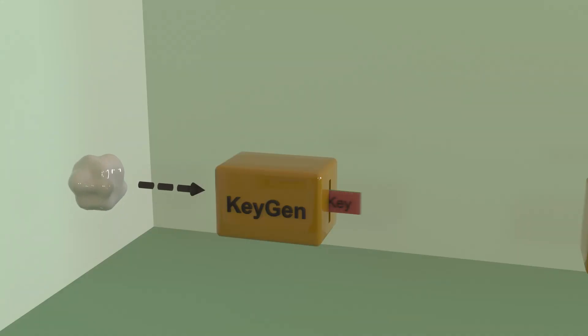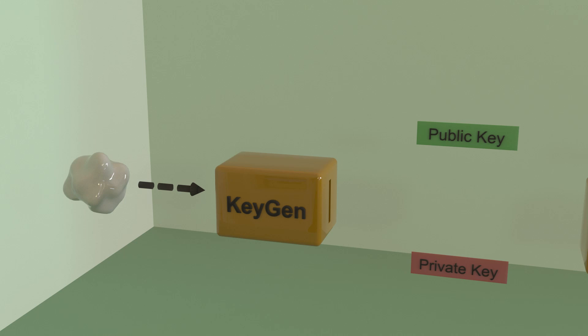Hash functions are one part of making digital signatures. The other is what is known as a digital signature algorithm. Digital signatures use something known as asymmetric keys, which are used for both signing as well as encryption, but we'll just be looking at the signing. We begin by generating what is known as a key pair. The key generator takes pseudorandom numbers from a source of entropy and produces two keys. The structure and format of the keys depends on the algorithm, which we'll get to after we go over the process in general.